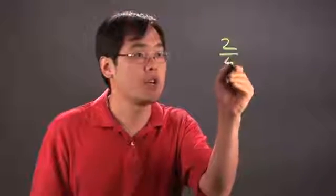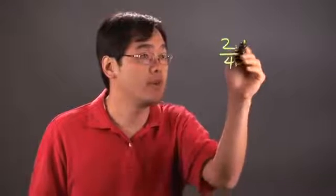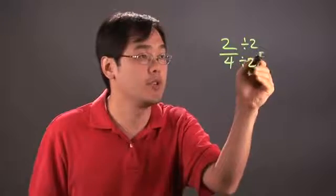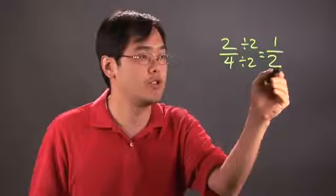Now if you have a fraction such as two fourths turning into simplest form means can you reduce it. Now two and four, you can tell they both have a factor of two in common so you divide both sides by two. So two divided by two is one, four divided by two is two.